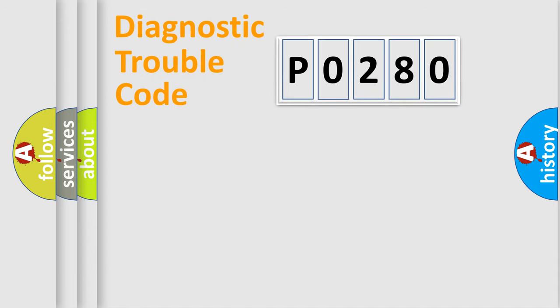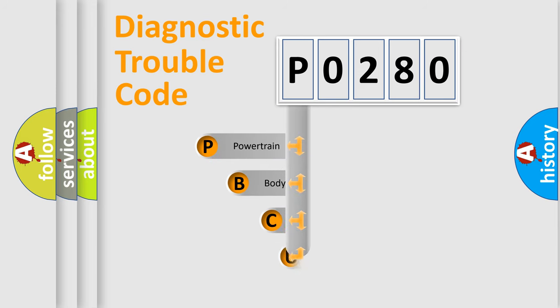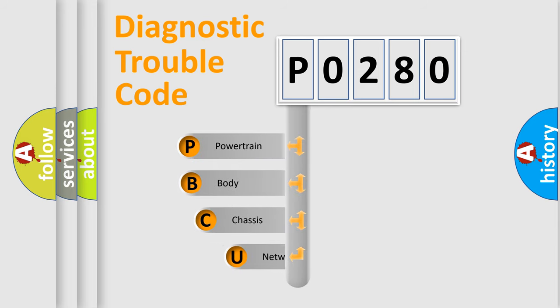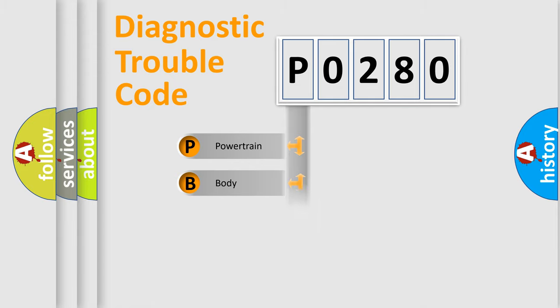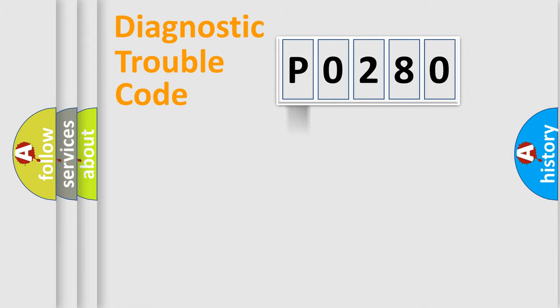Let's do this. First, let's look at the history of diagnostic fault code composition according to the OBD2 protocol, which is unified for all automakers since 2000. We divide the electric system of the automobile into four basic units: Powertrain, body, chassis, and network.